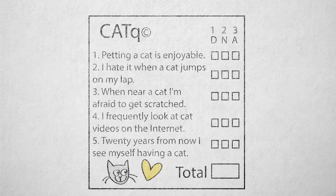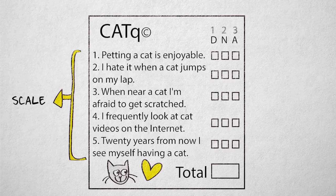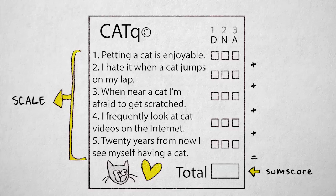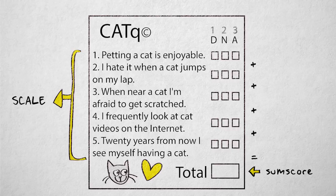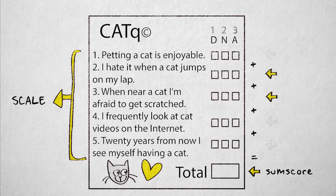Items that are supposed to measure the same construct, or the same aspect of a construct, form a scale. When the items that form a scale are added together, we get a sum score that indicates a person's value on the property. Of course, in our example, agreement with some items indicates high cat fondness, while agreement with others indicates low cat fondness.